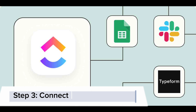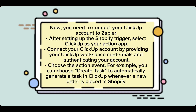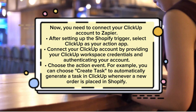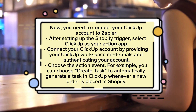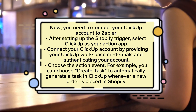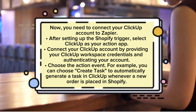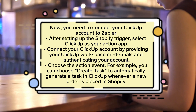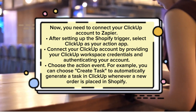Step 3: Connect ClickUp to Zapier. Now, you need to connect your ClickUp account to Zapier. After setting up the Shopify trigger, select ClickUp as your action app. Connect your ClickUp account by providing your ClickUp workspace credentials and authenticating your account. Choose the action event — for example, you can choose Create Task to automatically generate a task in ClickUp whenever a new order is placed in Shopify.